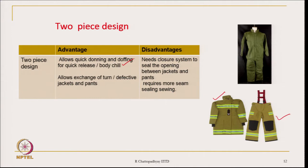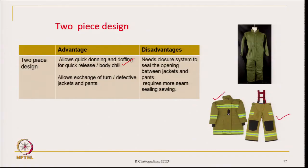Another advantage of two-piece design is that the restriction imposed by the garment on the user — restriction in terms of the movement of the limbs — will be much less, because it is a two-piece design. So knowing these benefits, one has to think whether to choose two-piece design or one-piece design.